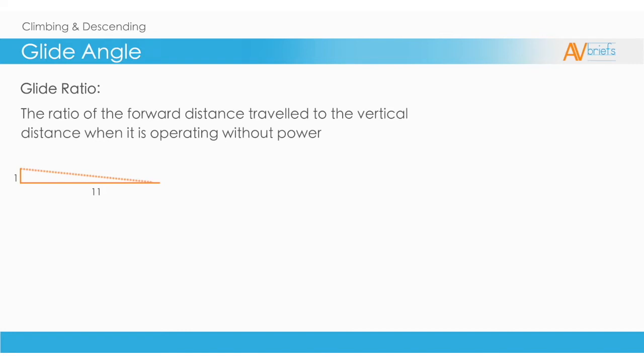In the diagram shown, the diagram on the left shows a typical training airplane glide ratio of 11 to 1. This means for every 1 unit of lost height, it will travel 11 units forward.